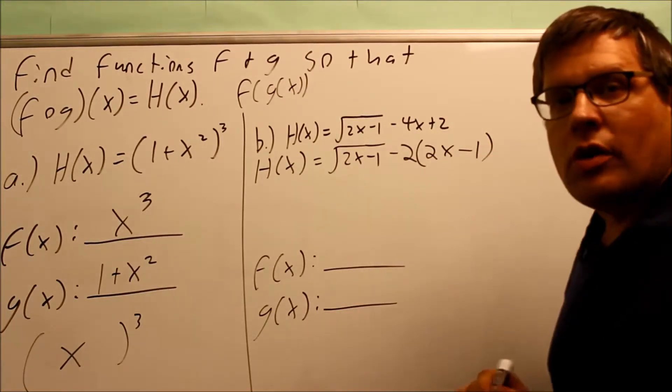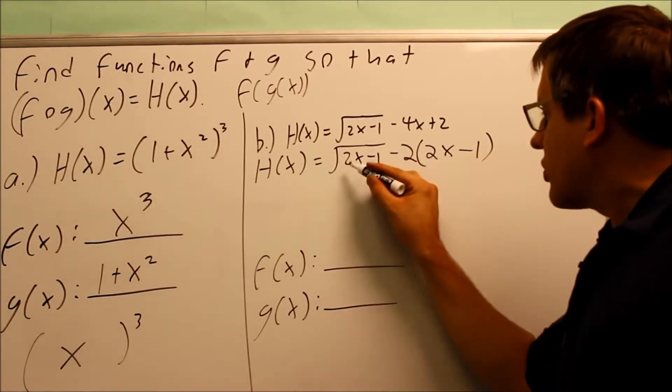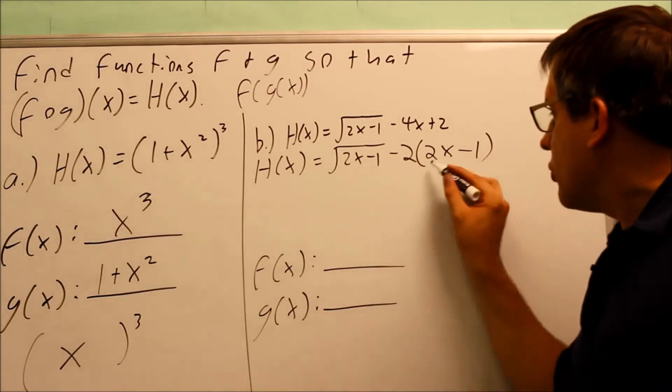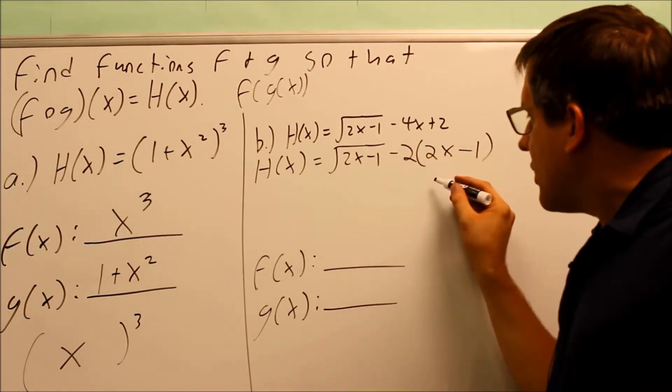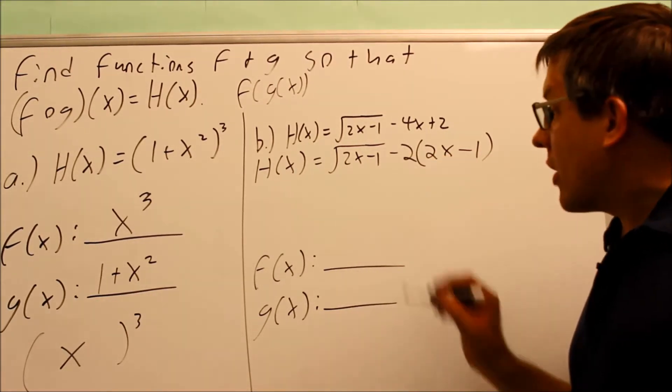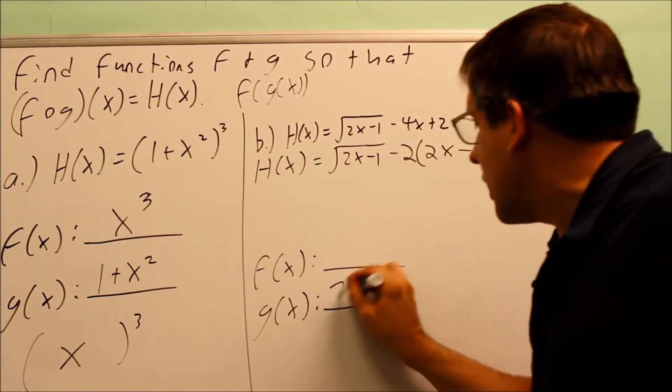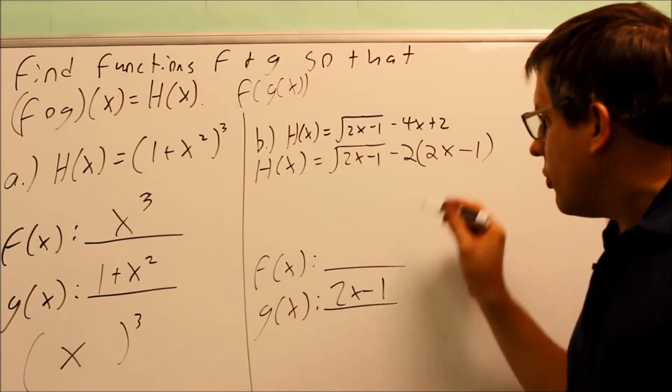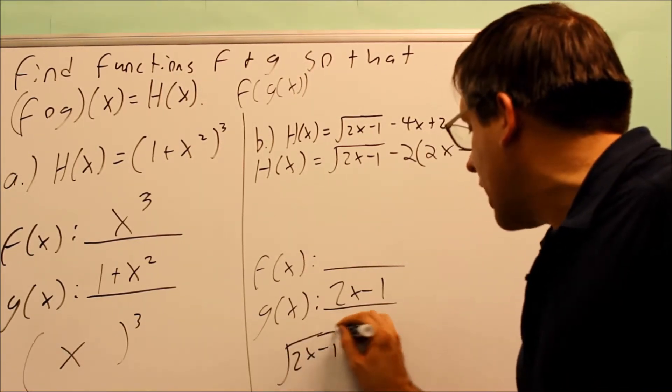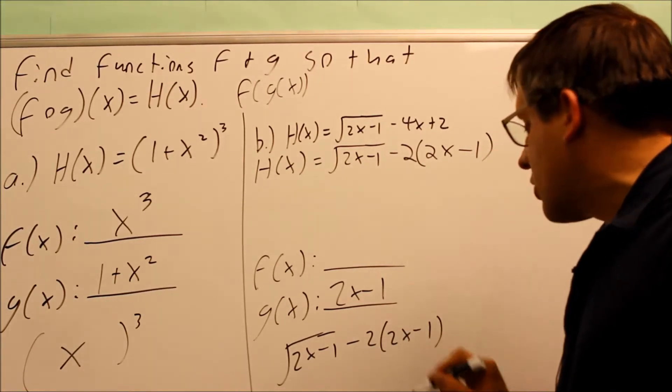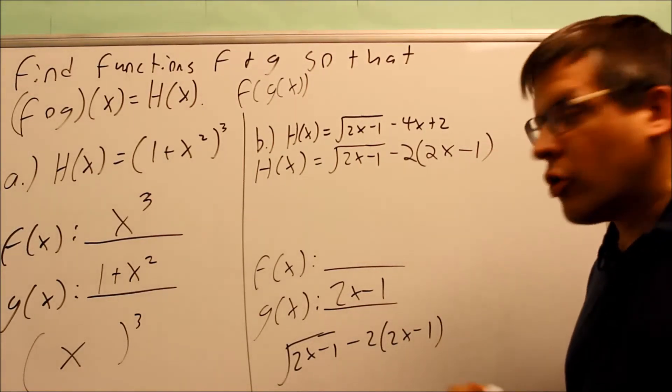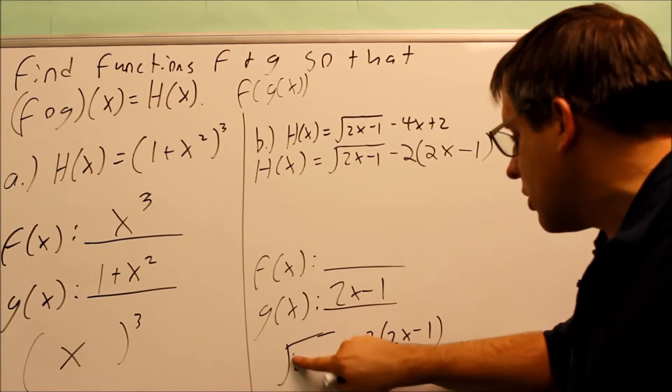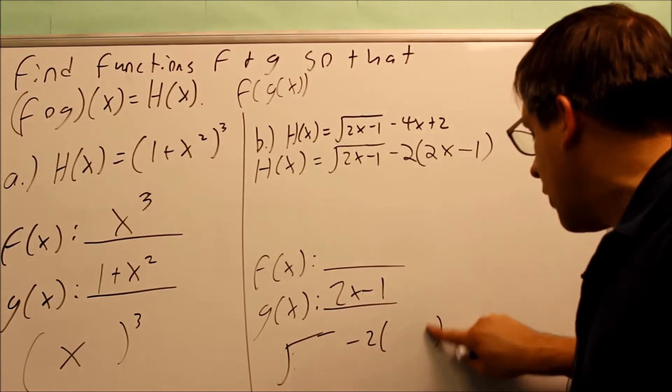So what we notice here is now I notice that there's two different things repeating itself. I have a 2x minus 1 in here and a 2x minus 1 over there. The one that repeats is the one that's going to go down for g of x—that's the one that's inside of something else. So I'm going to put 2x minus 1, that's going to be my g of x. Again, we'll do the same thing that we did for the last one. Here is my expression, and what I'm going to do is I'm going to remove the g of x that I identified—I'm going to remove it from here and I'm going to remove it also from here.